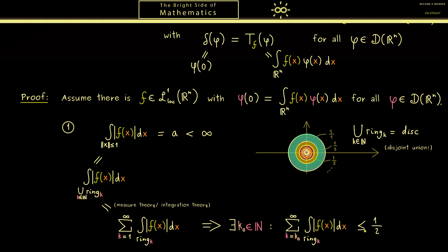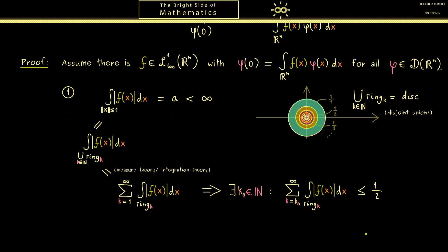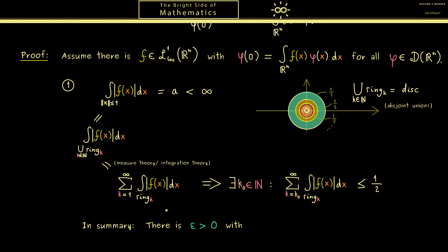For example we could make it smaller than 1 half. And I take 1 half because it's a number that is smaller than 1 and this is what we need for the contradiction. Okay and now we can just summarize the whole thing.